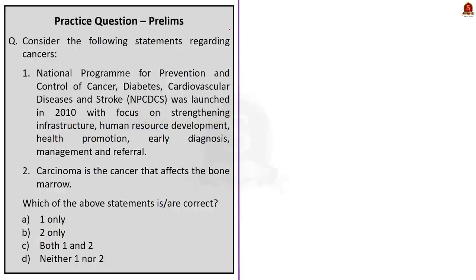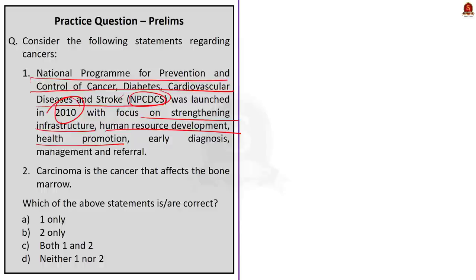Now moving on, consider the following statements regarding cancers. Statement 1, national program for prevention and control of cancer, diabetes, cardiovascular disease and stroke, that is NPCDCS was launched in 2010 with the focus on strengthening infrastructure, human resource development, health promotion, early diagnosis, management and referral. Statement 2, carcinoma is the cancer that affects the bone marrow. Which of the statements given above is or are correct? Option A 1 only, option B 2 only, option C both 1 and 2, and option D neither 1 nor 2.